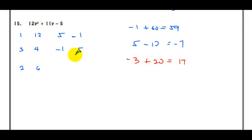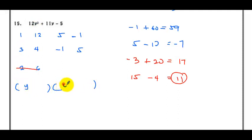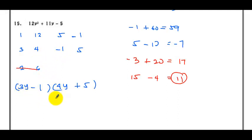Let's try (3, 4) with (−1, 5): 3 times 5 is 15, 4 times −1 is −4, and the result is 11. We got the correct combination, so we don't need to try (2, 6). Our combination is 3, 4, −1, and 5. The factors will look like this: bring y in each binomial, bring down 3 and positive 5. The values cross: 4 goes here and −1 goes here. So this is our correct factored form.